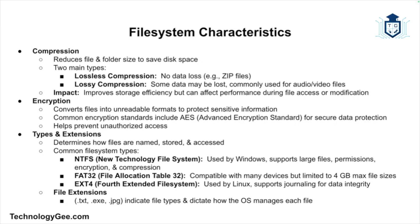Another component is encryption. Encryption secures files by converting them into unreadable formats without a key, helping protect sensitive information from unauthorized access. Common encryption standards include AES, or Advanced Encryption Standard, which is widely used for data security. Next we have types and extensions — the type of file system determines how files are named, stored, and accessed.